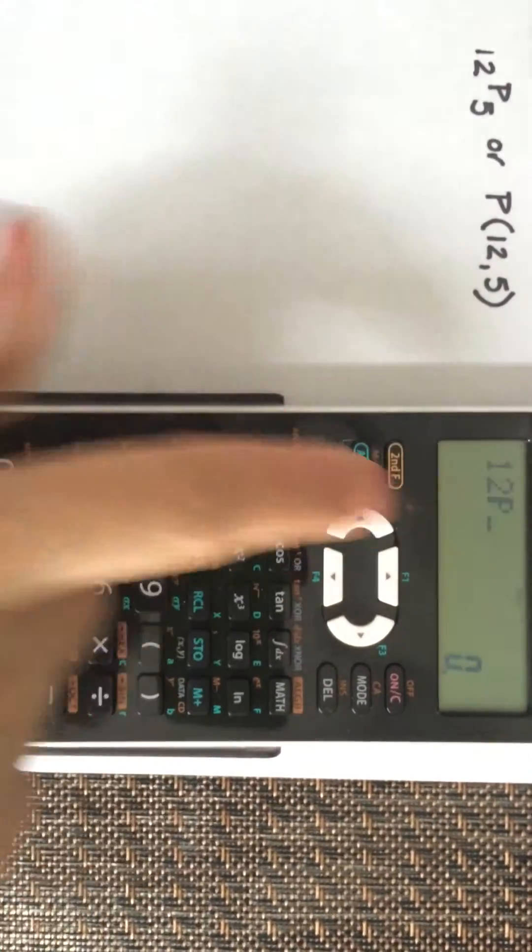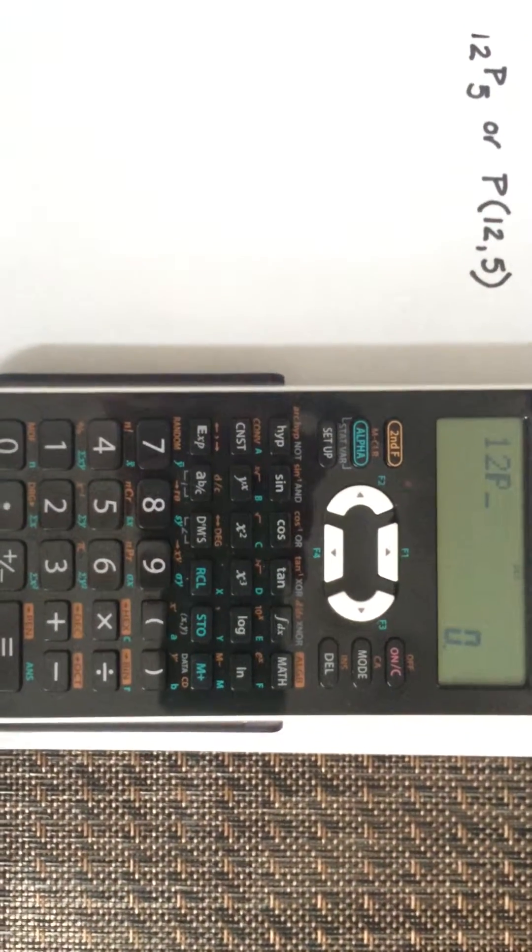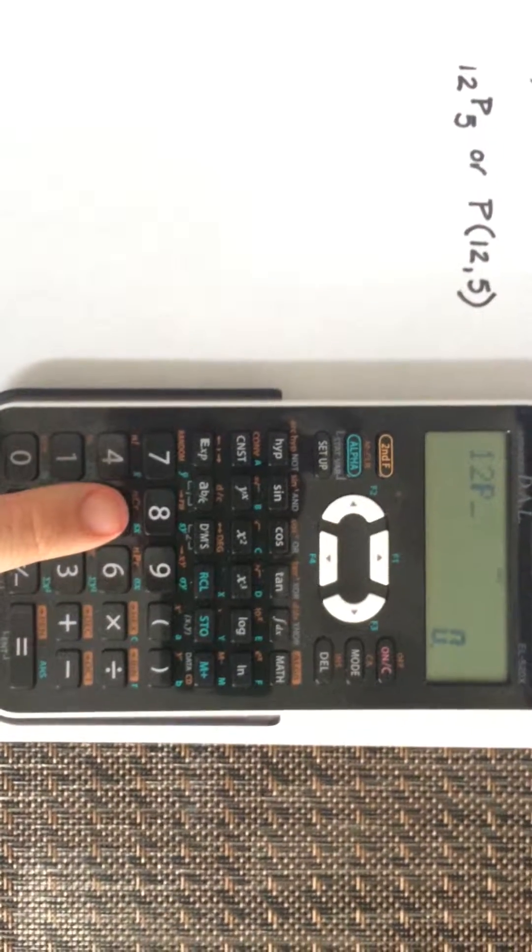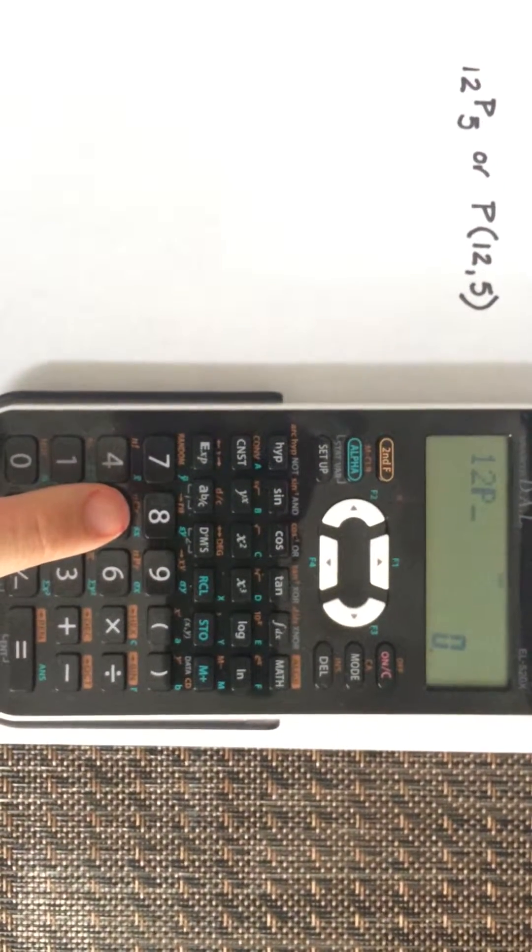You're going to see a P show up on the screen, and then you're just going to enter the second value, so how many you're selecting from the 12, which in our case is 5.